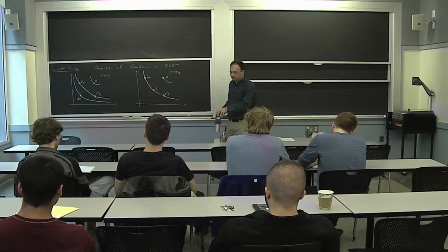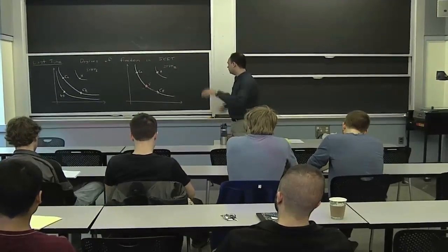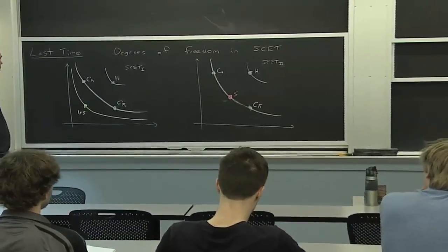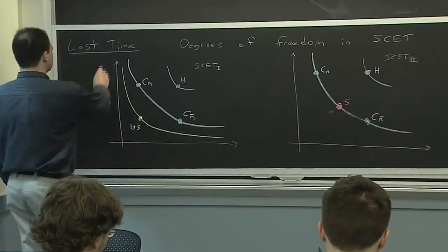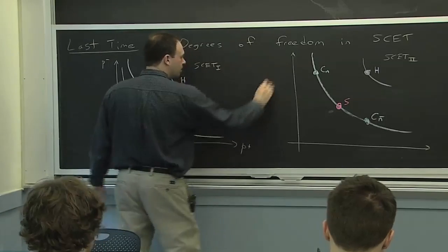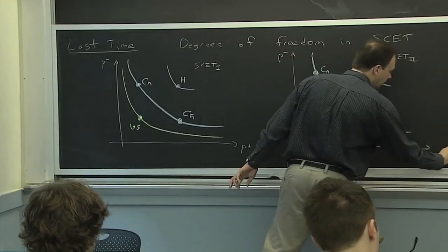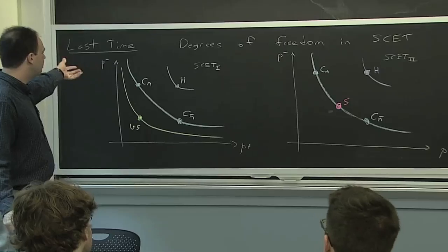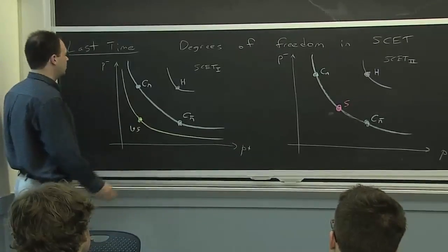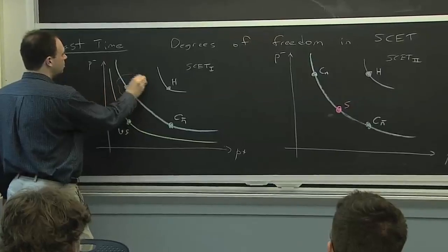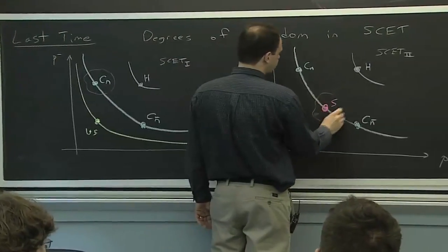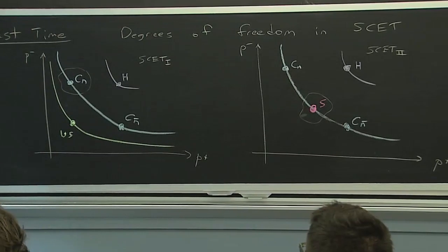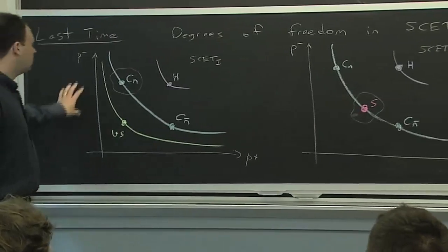Last time we were talking about degrees of freedom in SCET, and I drew these two pictures and emphasized that the difference between these two pictures is really where the degrees of freedom live in momentum space. This is the P minus P plus plane. And unlike most effective field theories, in this effective field theory we have degrees of freedom that have to be identified by two variables rather than just one. So we need two variables to say where collinears are or where softs are.